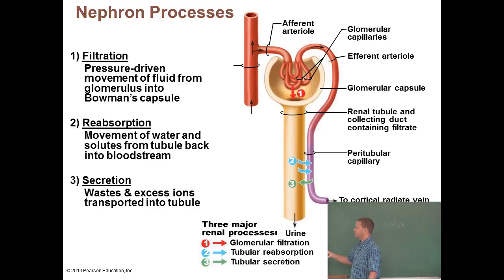The third process is secretion — we take things that are still in the bloodstream and put them back in the tubule. These would be waste products we don't want to keep. Anything that stays in the tubule and is not reabsorbed will become part of the urine.